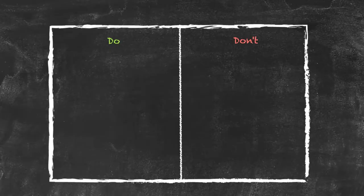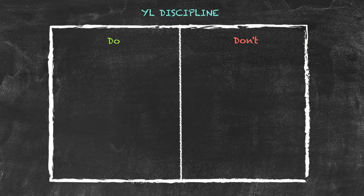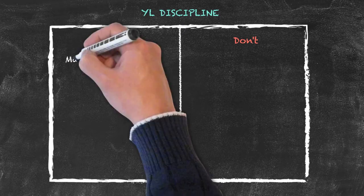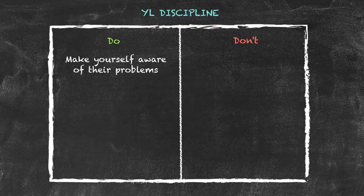So finally in this section, just some ideas around the discipline within young learners groups. Again, some things to do and some things not to do. Firstly, try to make yourself aware of any problems that they do have, either within school or outside of school, because they can affect the way that they're going to learn.